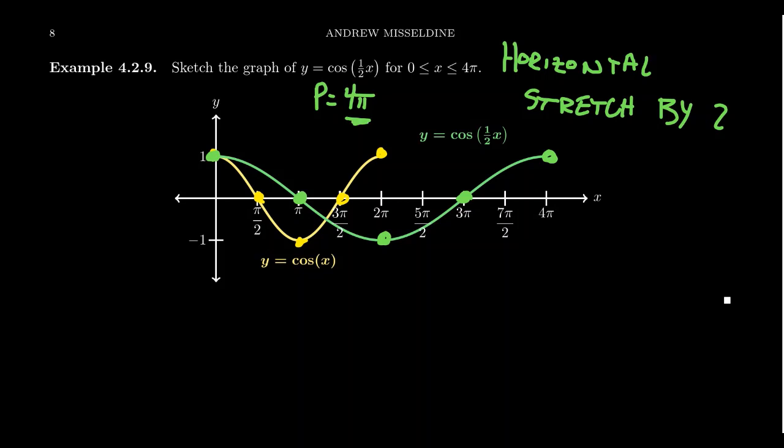So where did this 4π come from? Well, the idea is that for the standard function, for your standard function, let's just do cosine for a moment. Cosine of x here, your period is just going to be 2π.